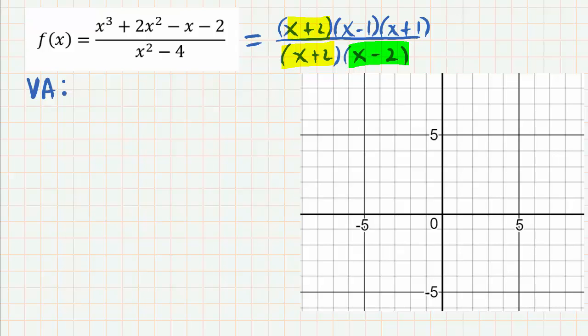When we look at this rational function, we see that negative 2 is simultaneously a zero for the denominator and the numerator, so that means it's not a vertical asymptote. The only vertical asymptote here is x equals 2. Let's go ahead and put that on our graph, so x equals 2 - we're gonna have a vertical asymptote right there.